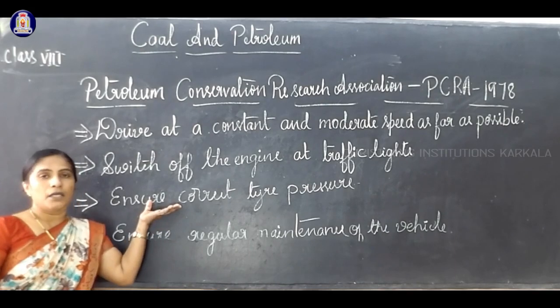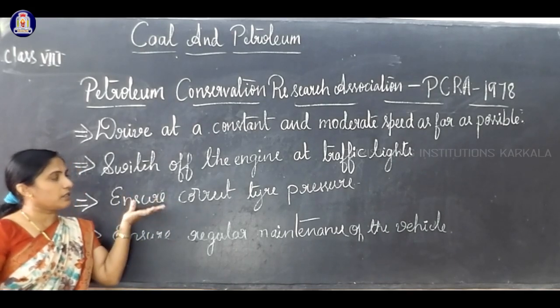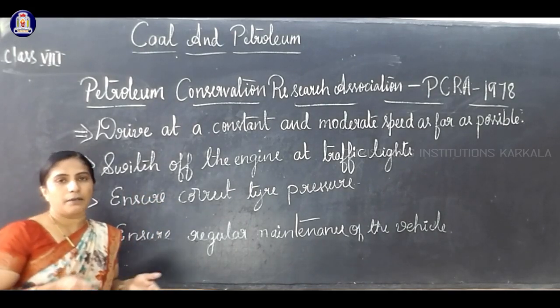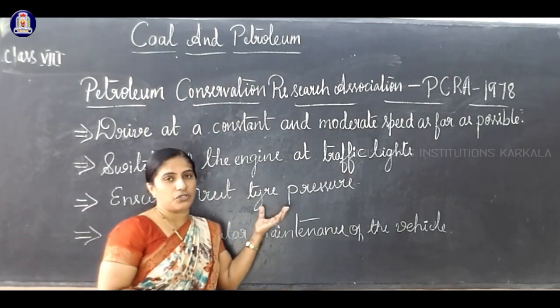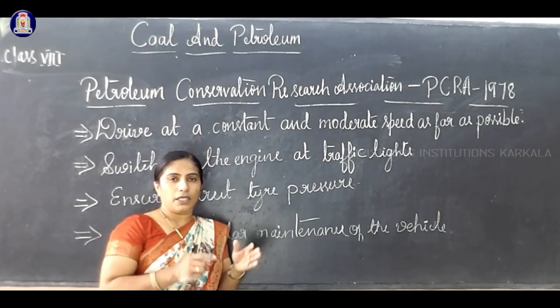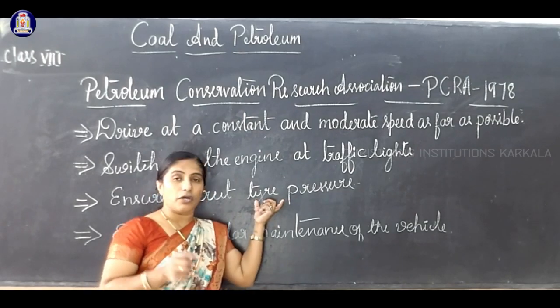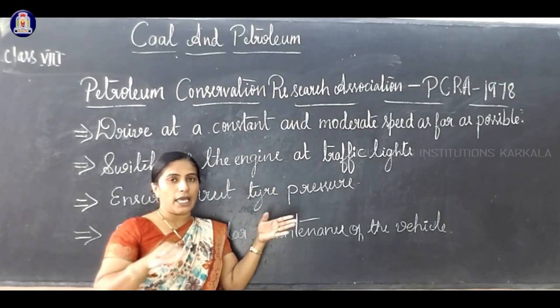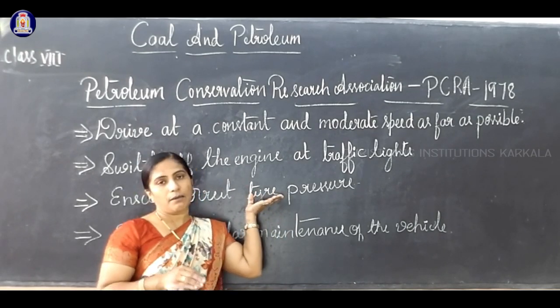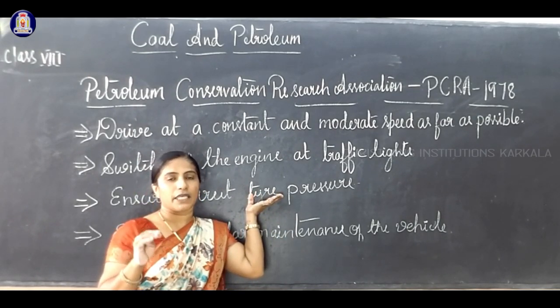If you run the engine, if you keep it switched on, then automatically we are releasing unburned fossil fuel smoke, that is carbon dioxide. That's why you have to switch off the engine at traffic lights. Third: ensure correct tire pressure. There will be tire pressure on each vehicle. They give the number according to how to maintain it. Otherwise, it will affect the balance of the vehicle.